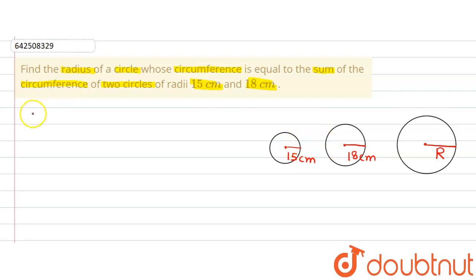Now the formula that we are going to use is that of circumference of circle. Circumference of circle is equal to 2π multiplied by radius.